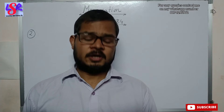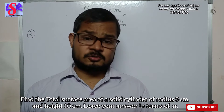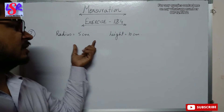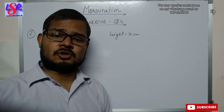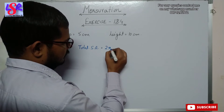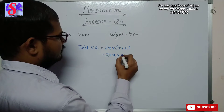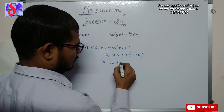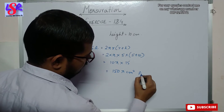Question 2: Find the total surface area of a solid cylinder of radius 5 cm and height 10 cm. Leave your answer in terms of π. Total surface area = 2πR(R + H) = 2 × π × 5 × (5 + 10) = 2 × π × 5 × 15 = 150π cm².